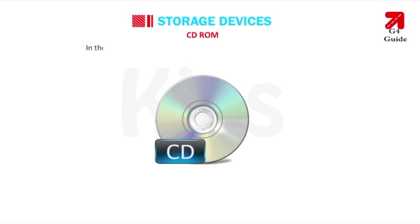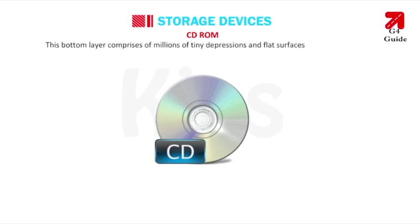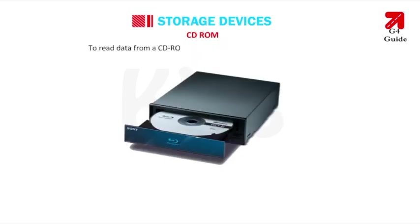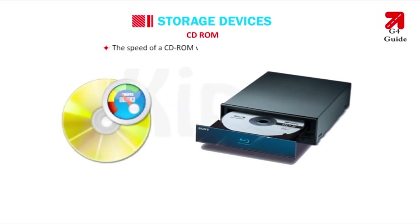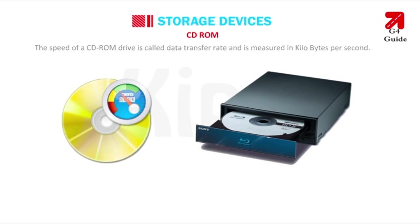A CD is made up of a reflective metal coating — usually aluminium — enclosed between two protective polycarbonate layers. Labels and descriptions are printed on the top layer, while the bottom layer reads data and comprises billions of tiny depressions and flat surfaces called pits and lands respectively. To read data from a CD-ROM, a high-power laser beam is required. The speed of a CD-ROM varies from 1x to 52x.